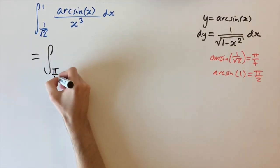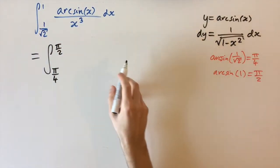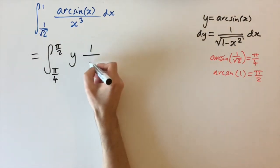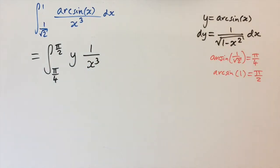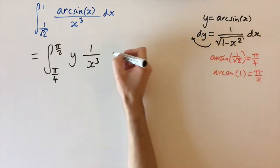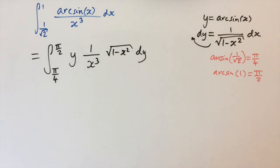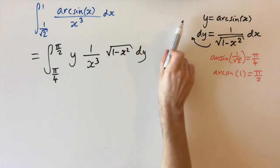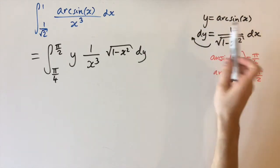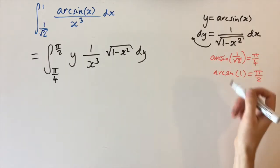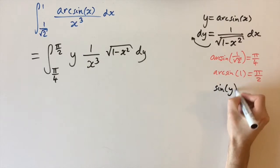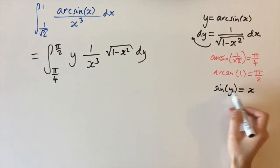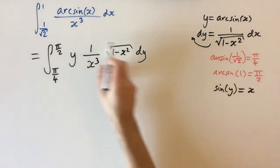The integral is now between limits pi over 4 and pi over 2. The arcsin in the numerator gets replaced by y, and we still have x's, which we'll eliminate. Replacing dx using the substitution gives a square root of 1 minus x squared factor. Since y equals arcsin(x), by definition sine of y equals x, so we replace all x's with sin(y).